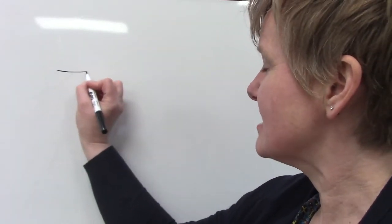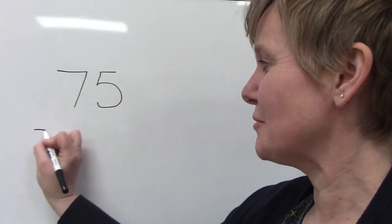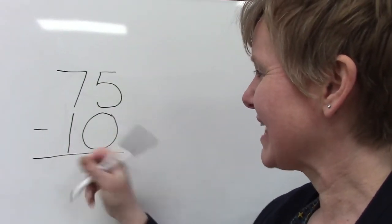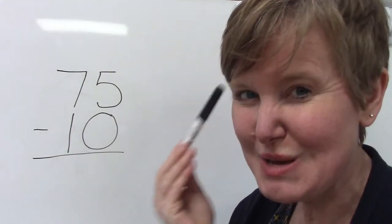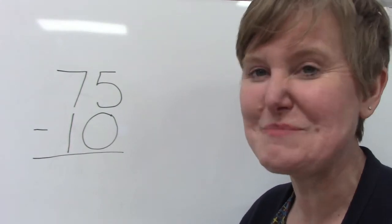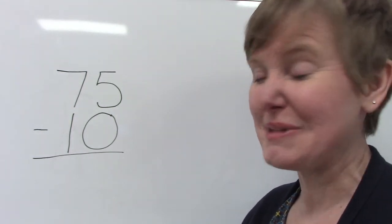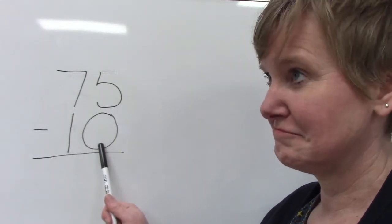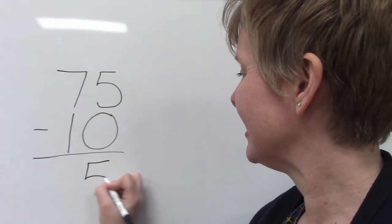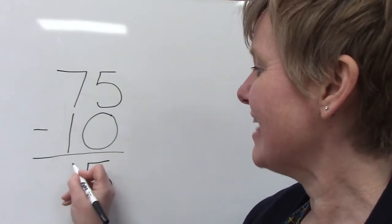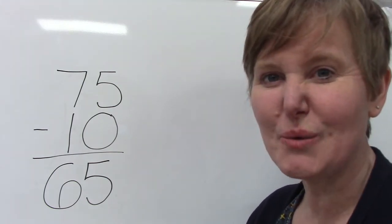Let's try a really large number. What about 75? I'm going to write 75 on the board, put my minus sign, and take away 10. 75 take away 10. Maybe you can think about it and you know on your hundreds chart what number would be right above 75. Let's look at our ones place — 5 take away 0 is 5. 7 take away 1 is 6. 75 take away 10 is 65.